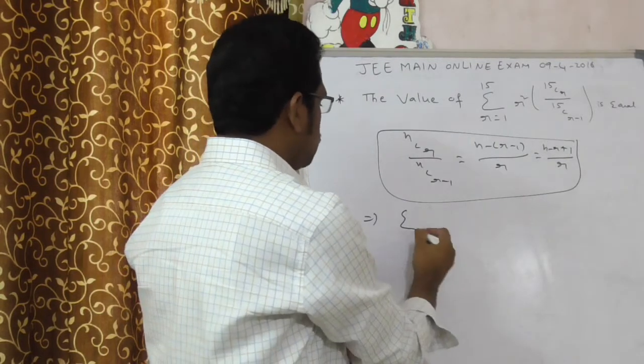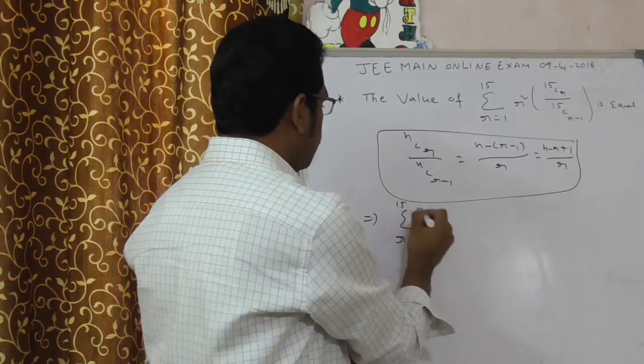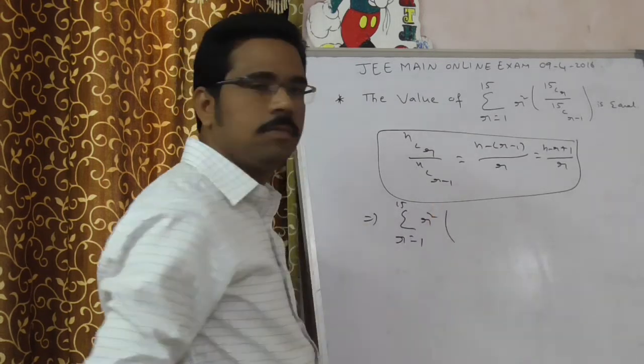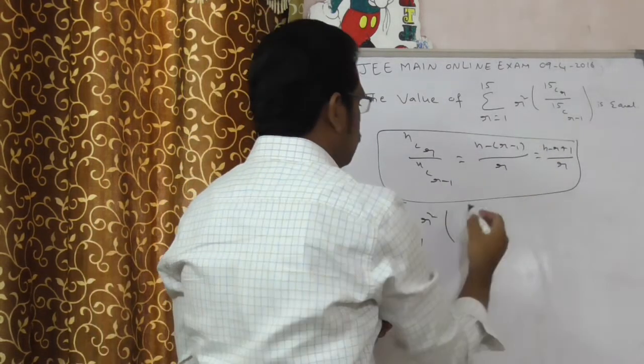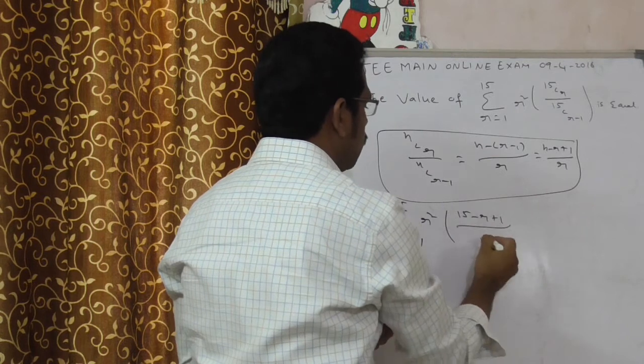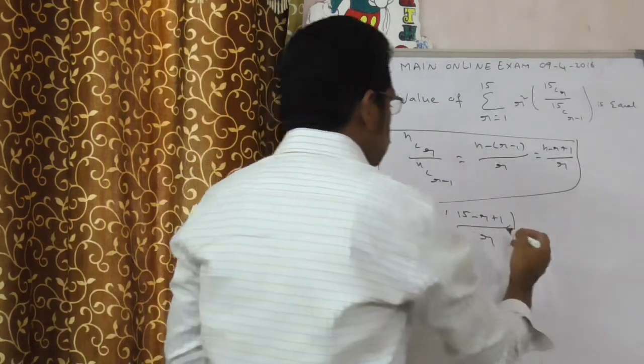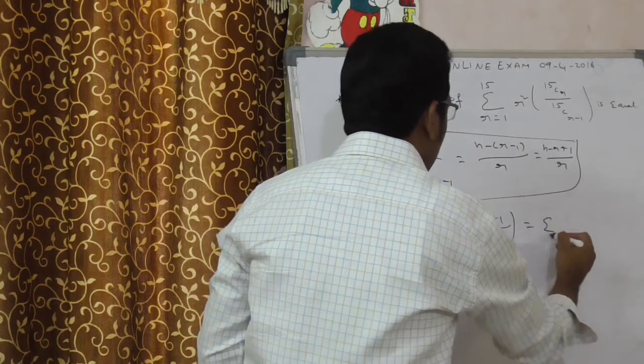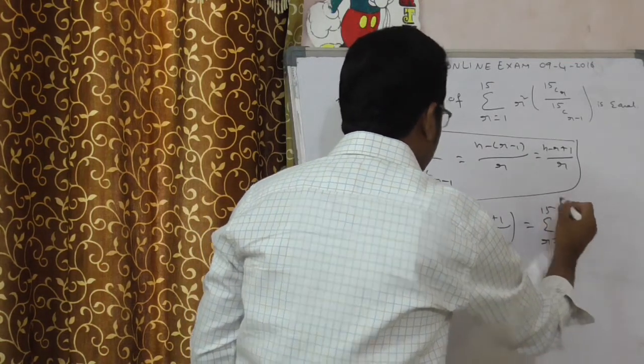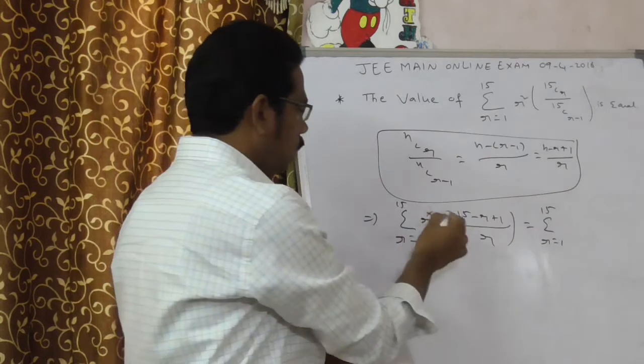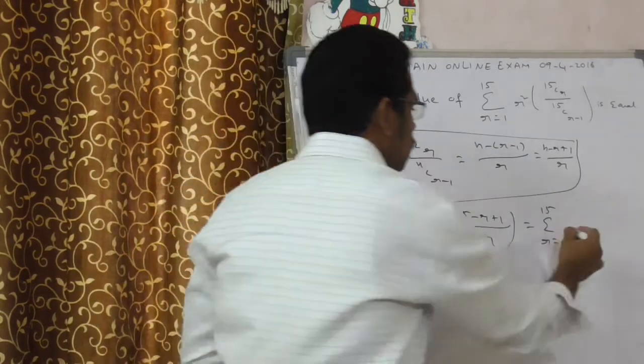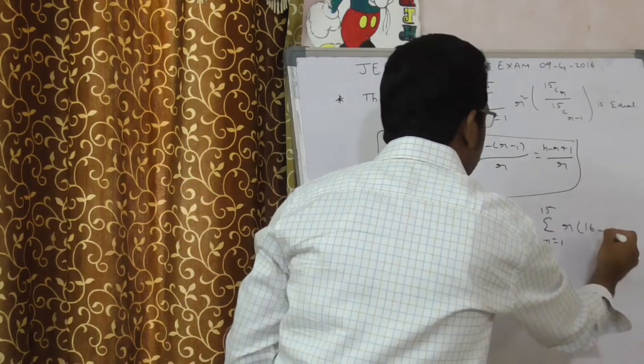Just observe here. Sigma r equals 1 to 15 r square of, substitute this formula here, 15 minus r plus 1 by r. Here n equals 15. Now this is nothing but sigma r equals 1 to 15 r square, r gets cancelled. This is r of 16 minus r.